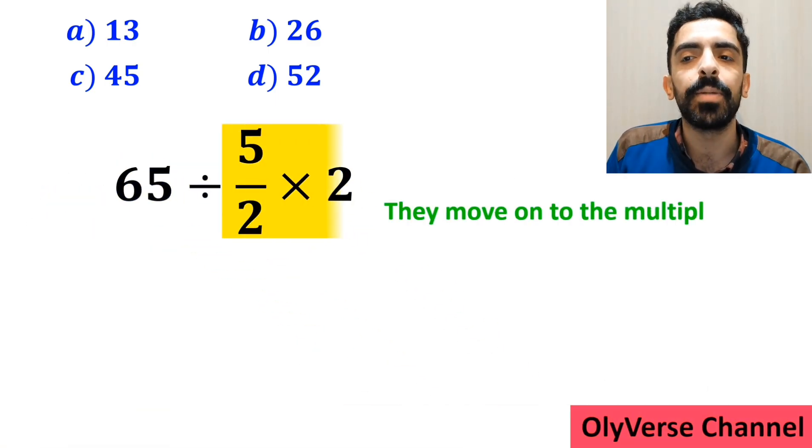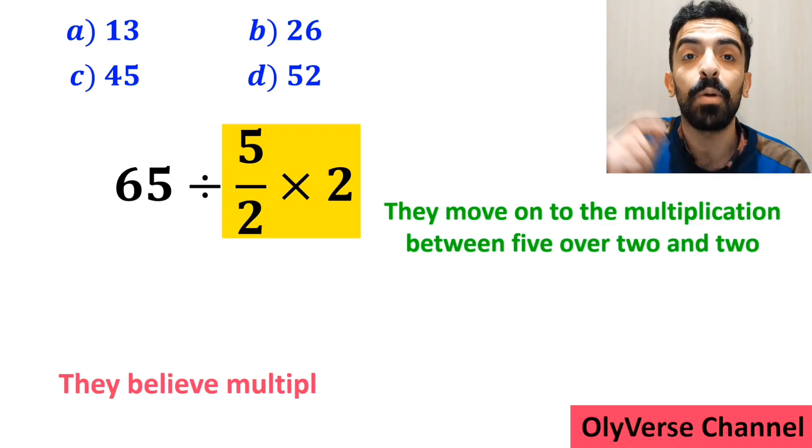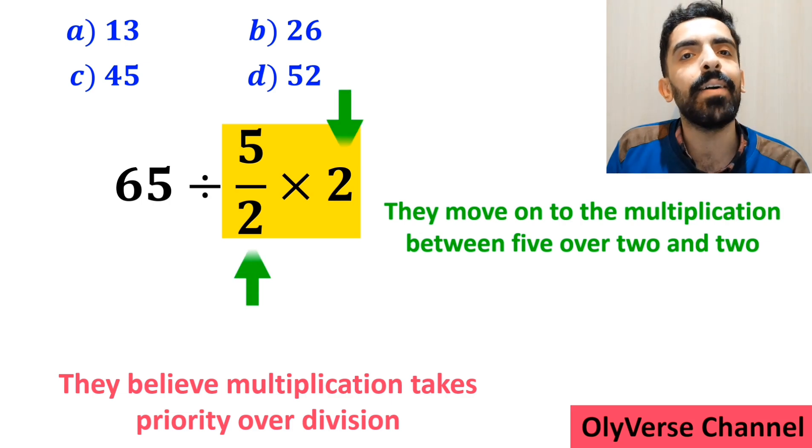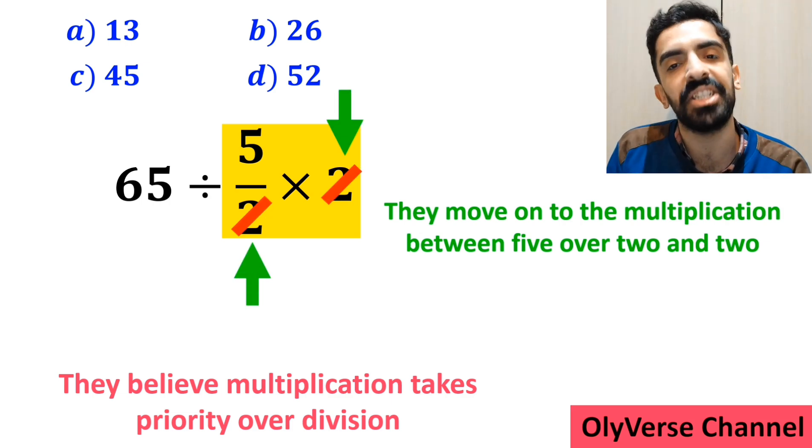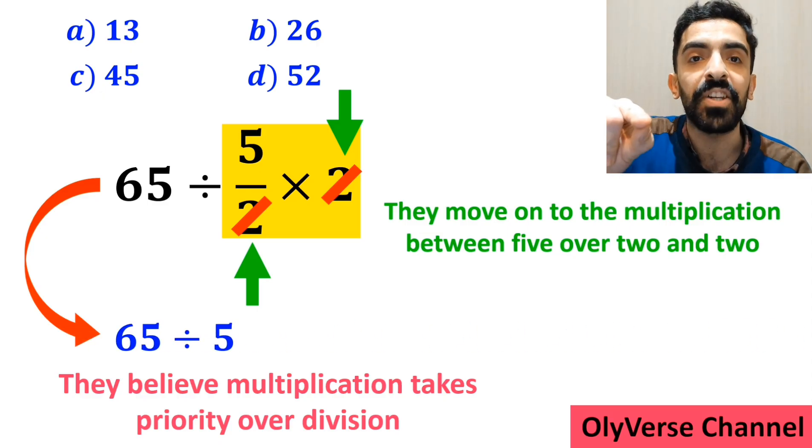Then they move on to the multiplication between 5 over 2 and 2, because they believe multiplication takes priority over division. As you can see in the image, they simplify the number 2 with the 2 in the denominator. And instead of the original expression, they write 65 divided by 5.